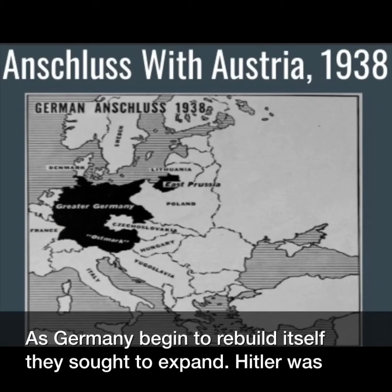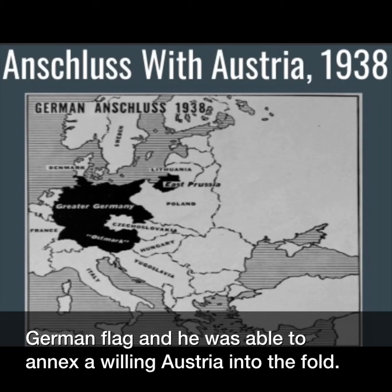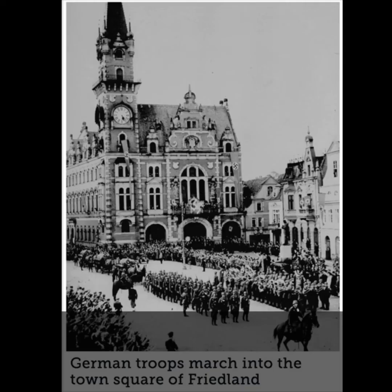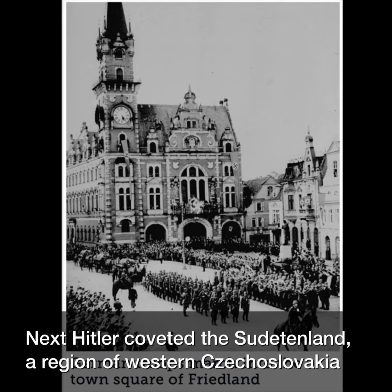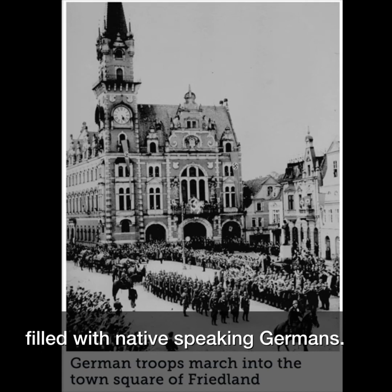As Germany began to rebuild itself, they sought to expand. Hitler was chiefly concerned with bringing German-speaking people under the German flag, and he was able to annex a willing Austria into the fold. Next, Hitler coveted the Sudetenland, a region of western Czechoslovakia filled with native German-speaking people.